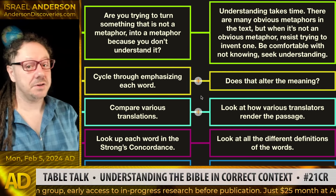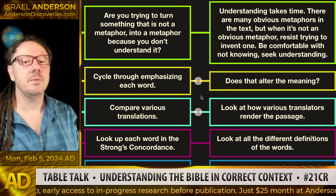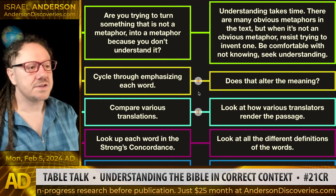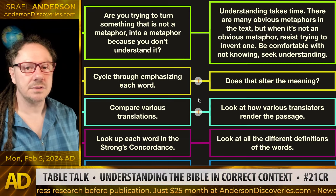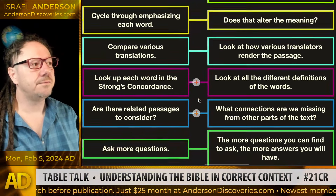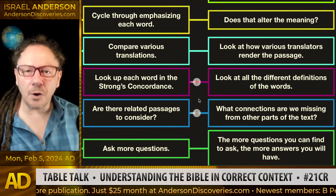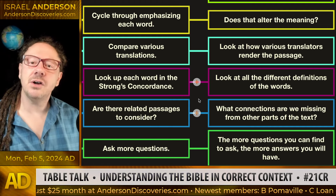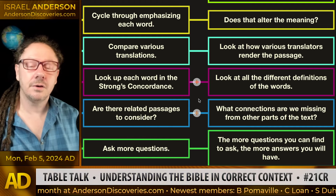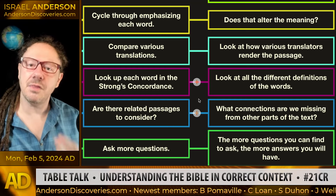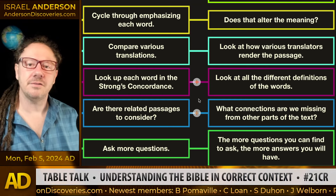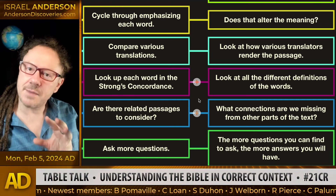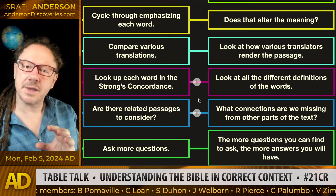You can't just layer the context over the top of it, or you're starting with a pretext. Cycle through emphasizing each word — does that alter the meaning? 'For God so loved the world.' 'For God so loved the world.' Cycle through each word in a passage and see — does that shape or reframe how it might be understood?